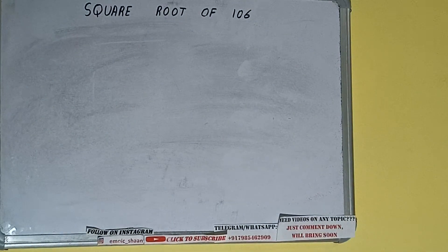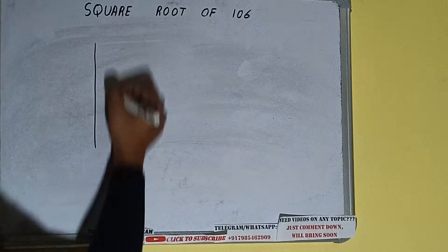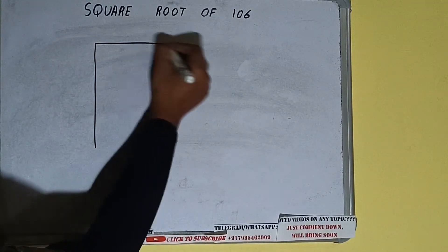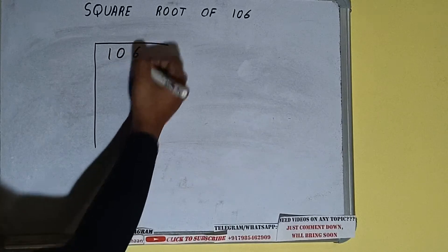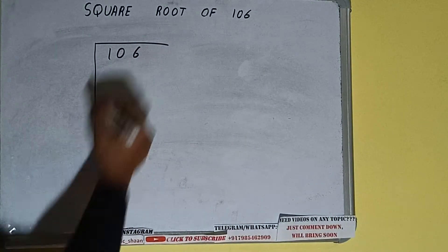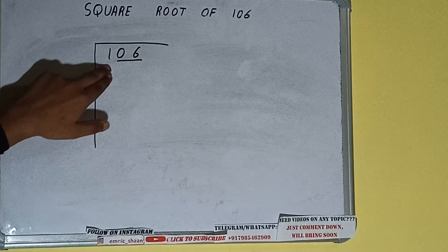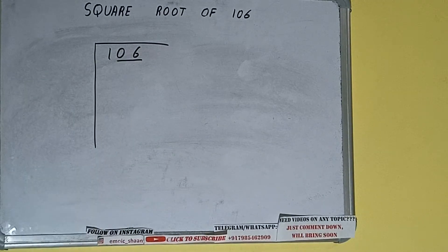Hello friends. In this video I'll be helping you with the square root of 106. First, we need to write the number, then form pairs from the right-hand side. One pair will be 06, and 1 will be left out. We'll divide the leftmost part first, then bring down the pair.